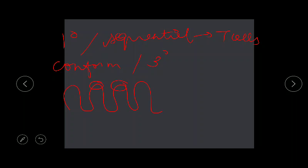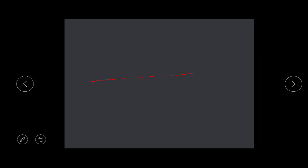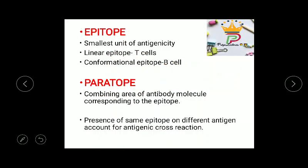The tertiary structure or conformational epitope is formed, and it usually recognizes B cells. Next, the paratope: the paratope is the combining area of an antibody molecule corresponding to the epitope. Consider this as an epitope — if an antibody comes and binds, the region where the antibody combines with the epitope is called the paratope. The presence of the same epitope on different antigens accounts for antigenic cross reactions.